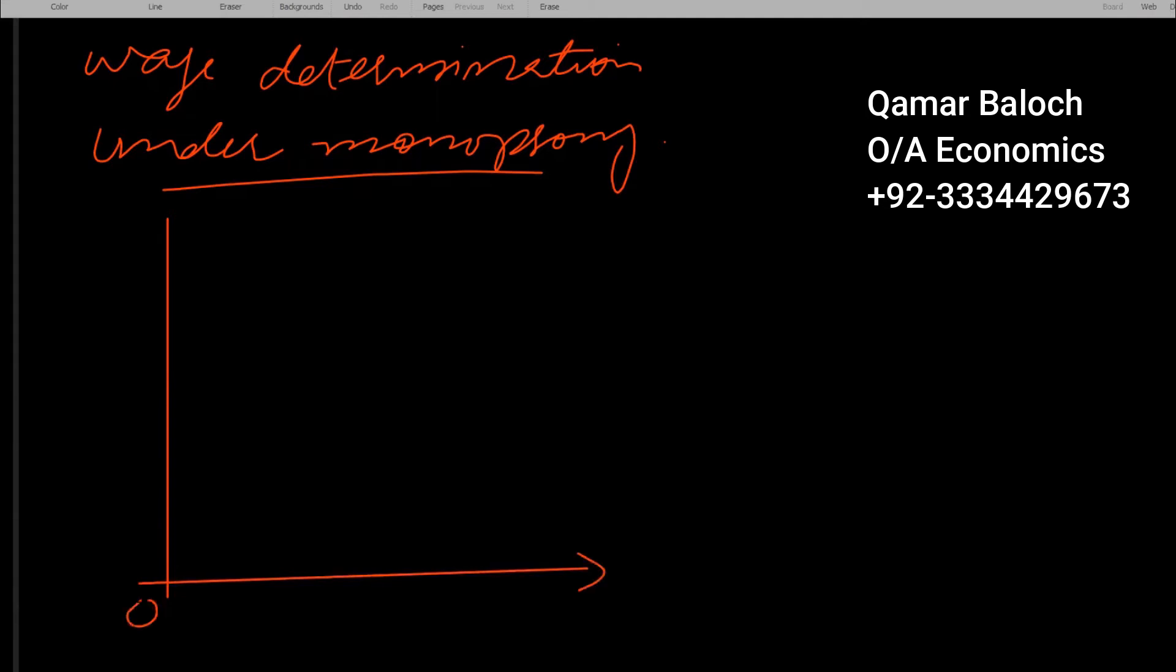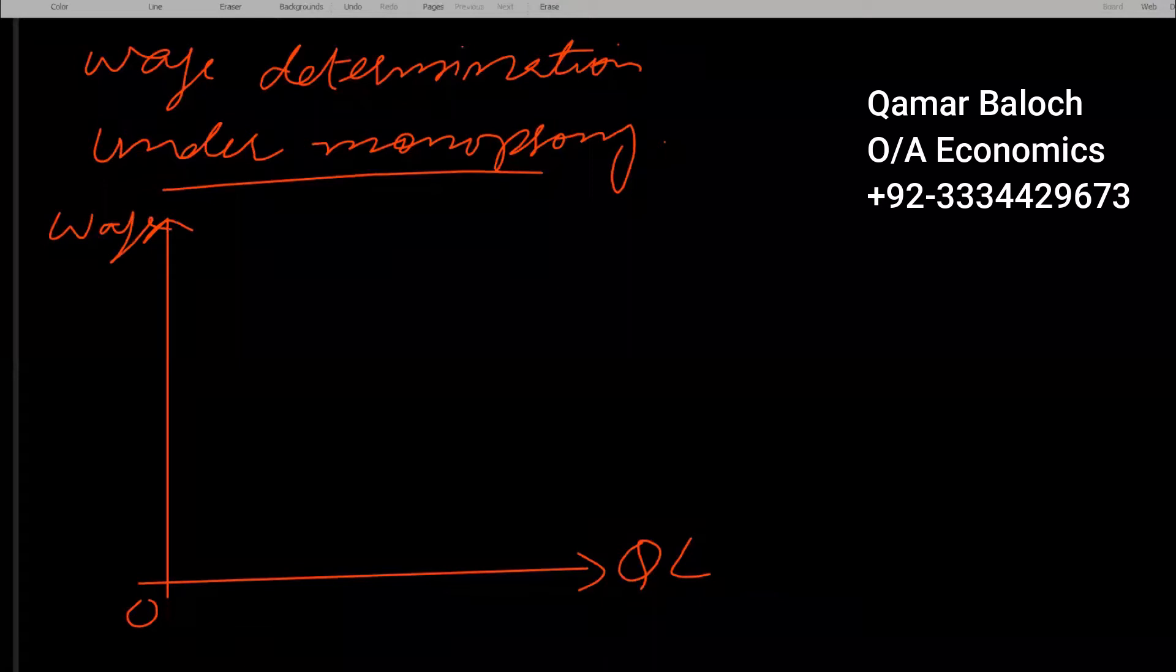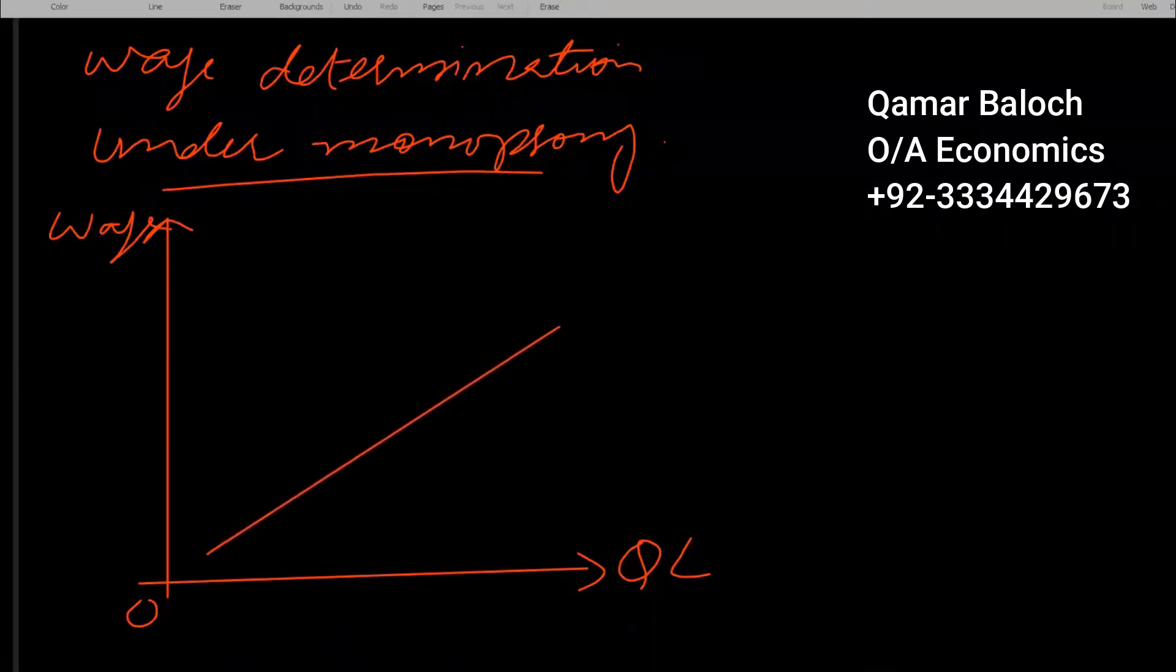We can explain it graphically. We have quantity of labor on x-axis, we have wage rate on y-axis, and we will have to draw again two straight lines, positively sloped straight lines which are divergent to each other.